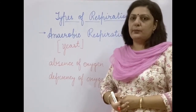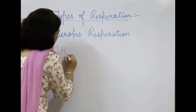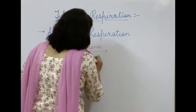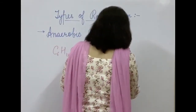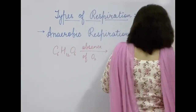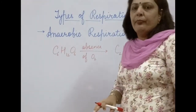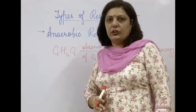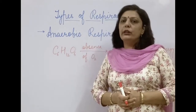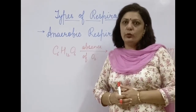In anaerobic respiration, glucose C₆H₁₂O₆ in the absence of oxygen leads to the formation of alcohol C₂H₅OH, along with carbon dioxide and energy. Energy is always released in respiration. So glucose breaks down into alcohol along with the release of carbon dioxide and energy, but the amount of energy released is less compared to aerobic respiration.